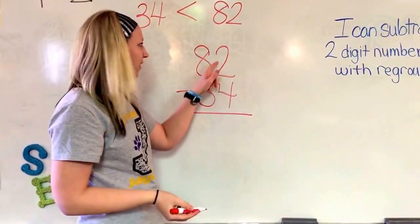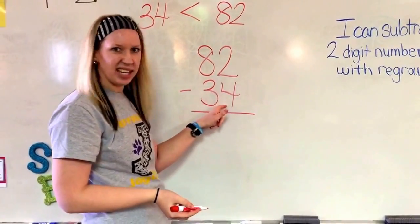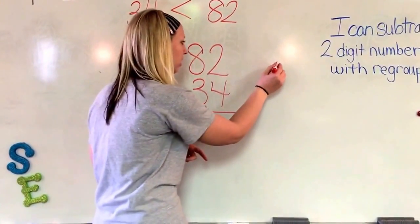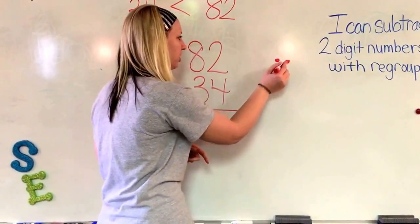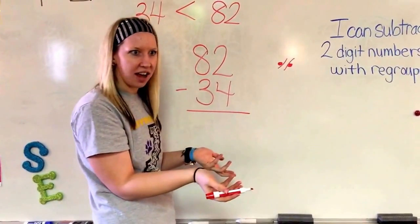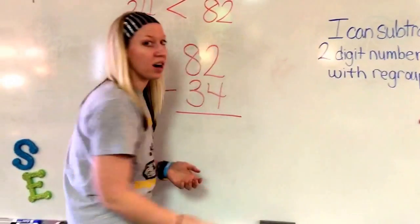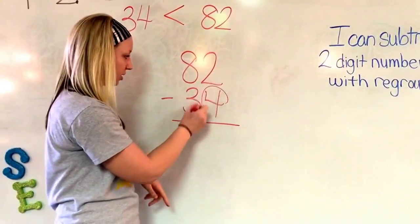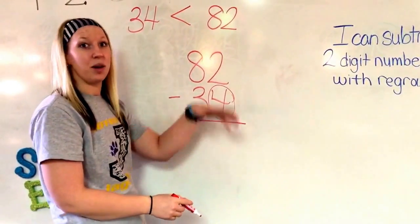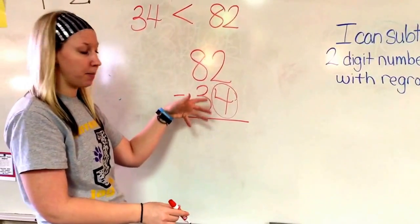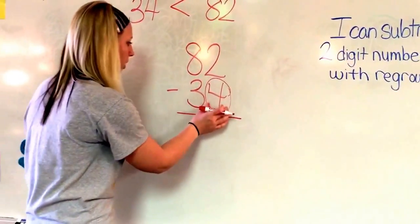But wait a minute. If I have two things, can I take four things away? Let me see. Two things. I'm going to try to take four away. One, two. I don't have enough. So we're going to learn that when there's more on the floor, see how there's more on this floor right here? You have to go next door. And there's many ways that you can do that. So I'm going to show you.